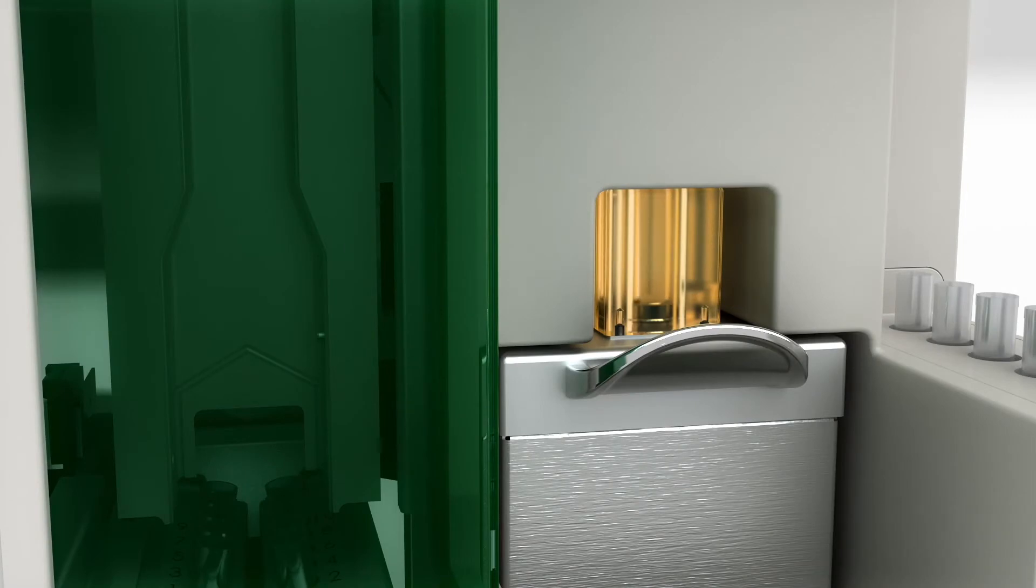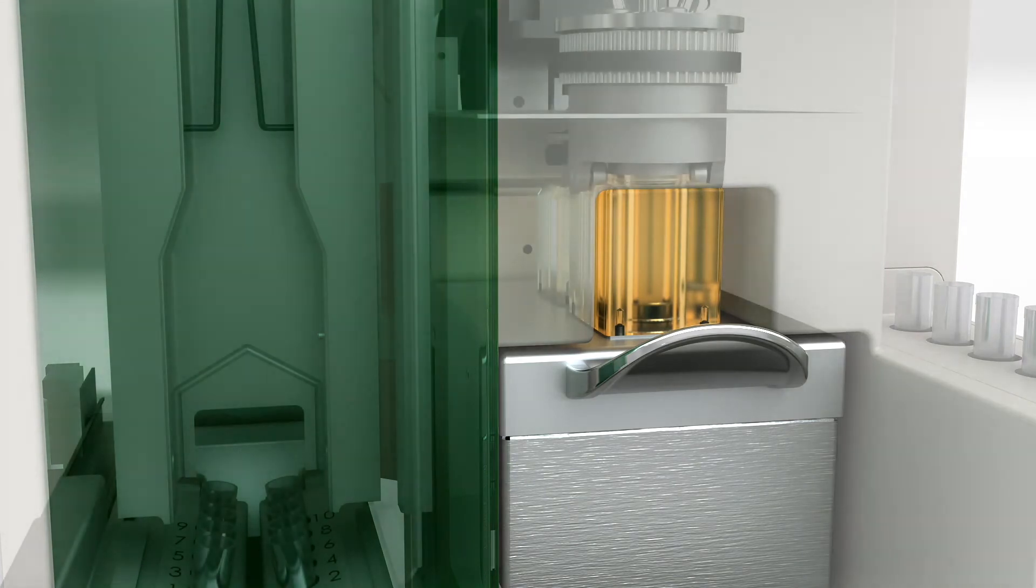The sample stage also continually vortexes your sample to keep cells from clumping or settling, which prevents clog formation and sample loss.